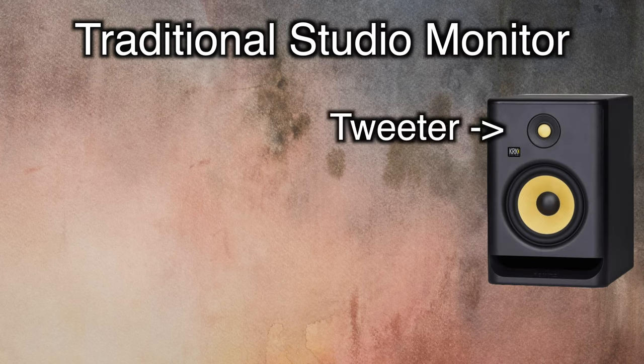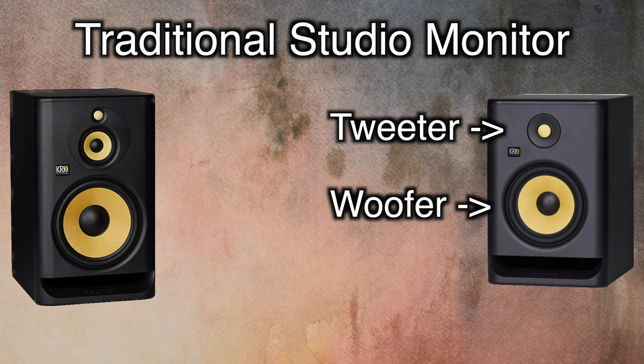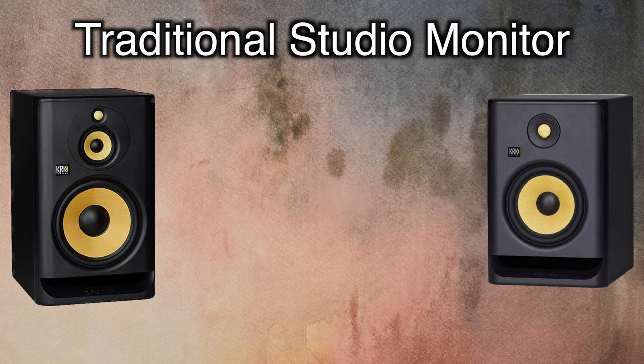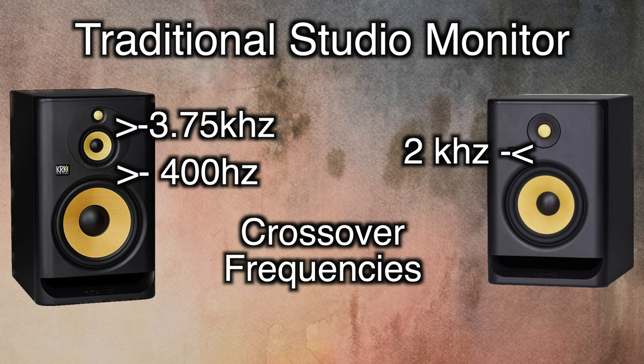You have the tweeter and the midwoofer. In a three-way monitor, you will also have another larger woofer. And with each of these cones, you will typically have a crossover frequency between each of them. This prevents each cone from working twice as hard while also preventing phase issues that would arise between the woofers without the crossover. For most studio setups, this won't be an issue.